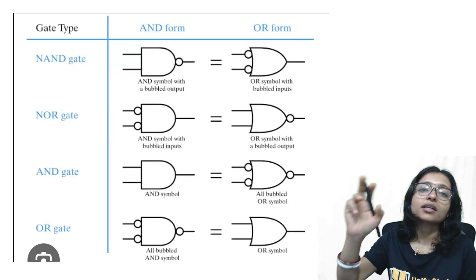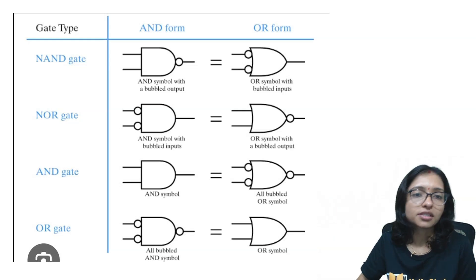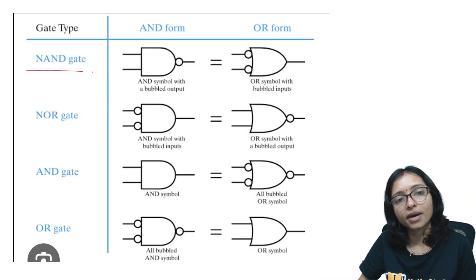Here first of all see that from where confusion starts. Confusion starts from here because in our mind it was going on AND gate means if I am thinking AND then here is bubble that is AND symbol with bubbled output.